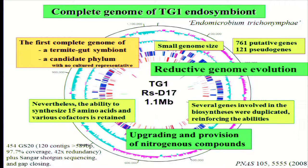We successfully reconstructed the complete genome of the TG1 endosymbiont. The genome size is very small, around 1.1 megabase pairs, and we found 760 putative genes. Surprisingly, we found a large number of pseudogenes in this small genome, indicating the genome is in the process of reductive evolution. Nevertheless, the ability to synthesize various amino acids and cofactors is retained, and several biosynthetic genes are duplicated. We consider that upgrading and provision of essential nitrogenous compounds is one of the major roles of this endosymbiont.